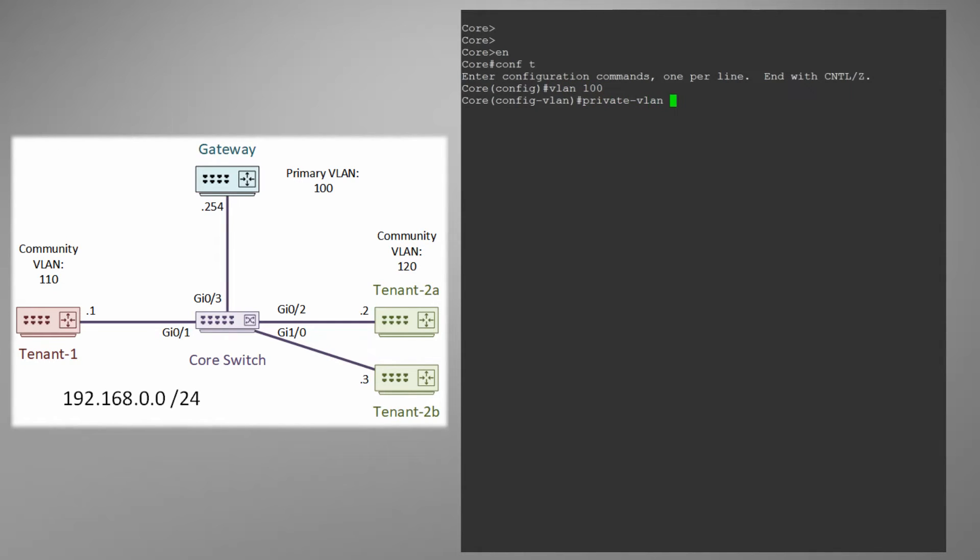First up you need to be aware that PVLANs and VTP have special requirements if you want them to work together. In our case VTP version 2 is enabled by default. For what we're doing we'll just set it to transparent as we're not using it.